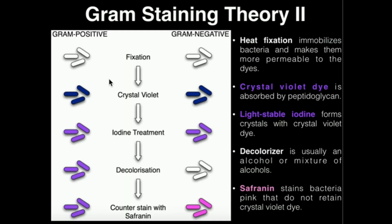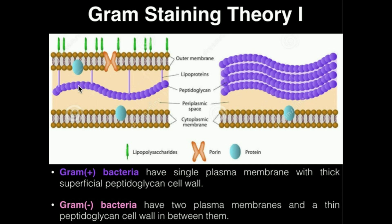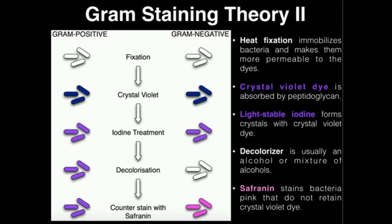For the actual gram staining, we first use a dye called crystal violet — which is violet, or purple. When we add crystal violet dye, it's initially going to get into both of the peptidoglycan layers in both gram-positive and gram-negative bacteria. We then treat it with something called gram's iodine. The iodine goes into the peptidoglycan and forms crystals with the crystal violet, helping them stick — it crystallizes them within the peptidoglycan layers.